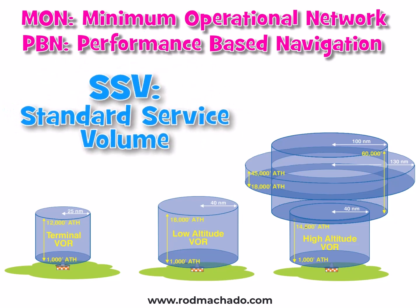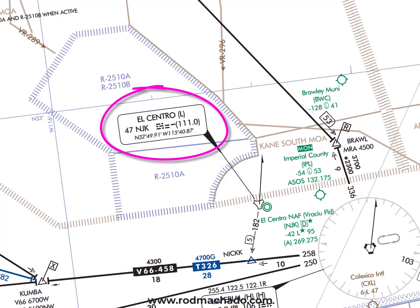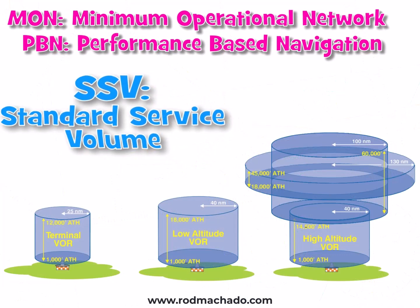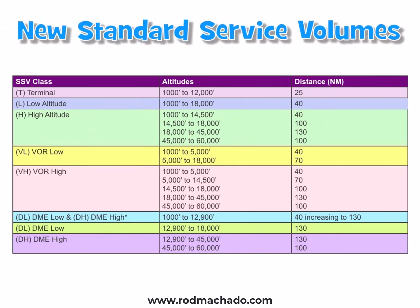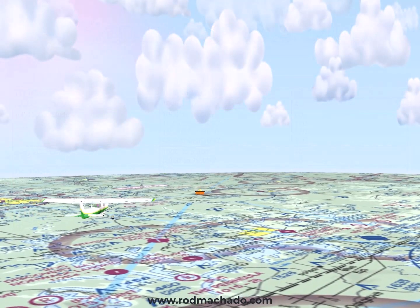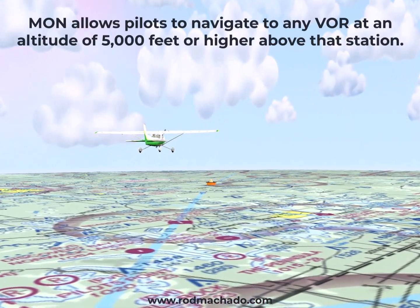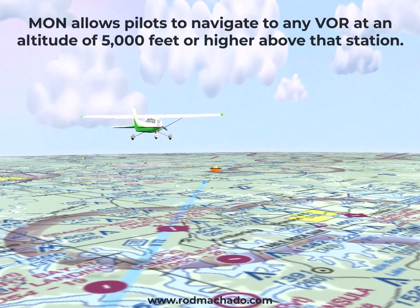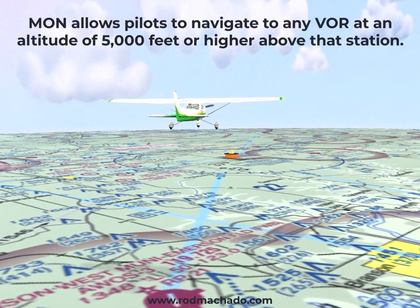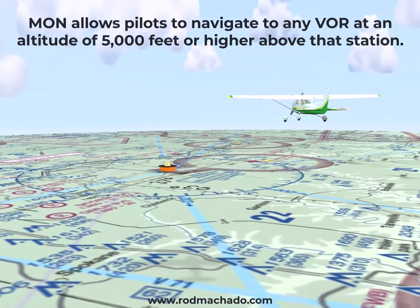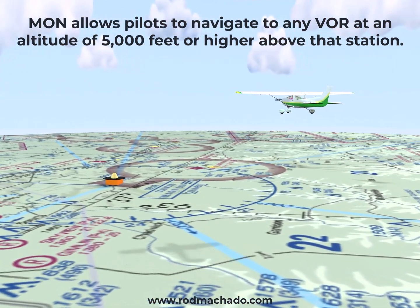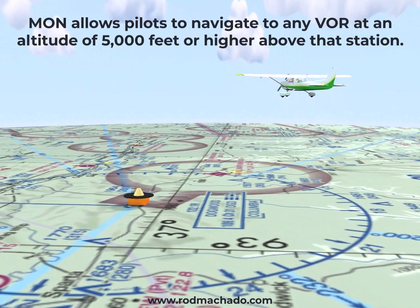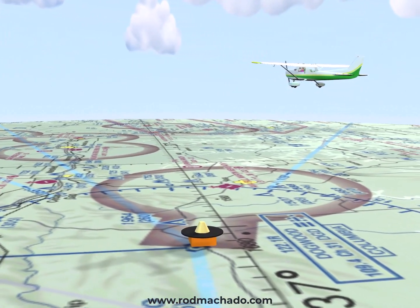These are the Standard Service Volumes in the form of an L or an H typically found inside the NAVAID frequency box on low-altitude route charts. With the MON Network Program eliminating some VORs and their related airways, increasing the service volumes of the remaining VORs and DMEs is essentially a mitigation strategy so that pilots could navigate to any point in the National Airspace System direct to a VOR when 5,000 feet above the VOR or higher.